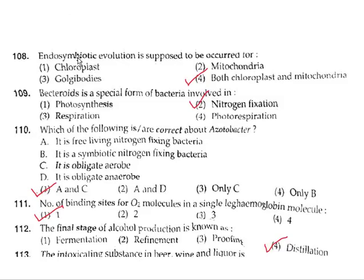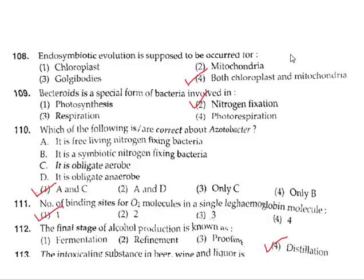Question 108: Endo-symbiote evolution is supposed to have occurred for chloroplasts and mitochondria. The endosymbiont hypothesis states that the chloroplast was a photosynthetic bacterium and the mitochondria was a heterotrophic bacterium that entered a eukaryotic cell and converted into organelles.